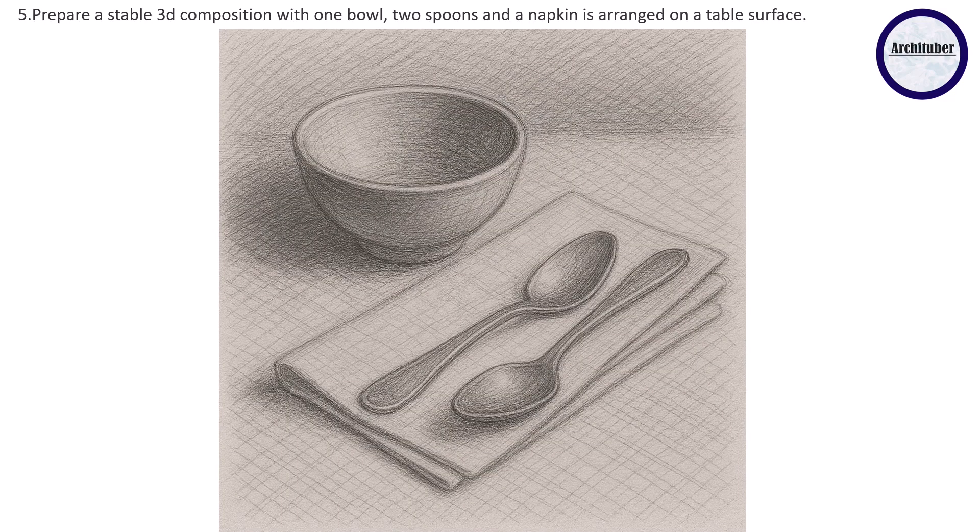Fifth question: prepare a stable 3D composition with one ball, two spoons and a napkin arranged on a table surface. Let's assume this is the table surface and then you have the napkin over here. See how nicely the napkin is made - you can literally feel like it's made up of fabric. If you see this curve which is very nicely done, even the effect over here where they've kept the spoon, the shadow effect - how nicely they have done it. You have to keep all of these minute details.